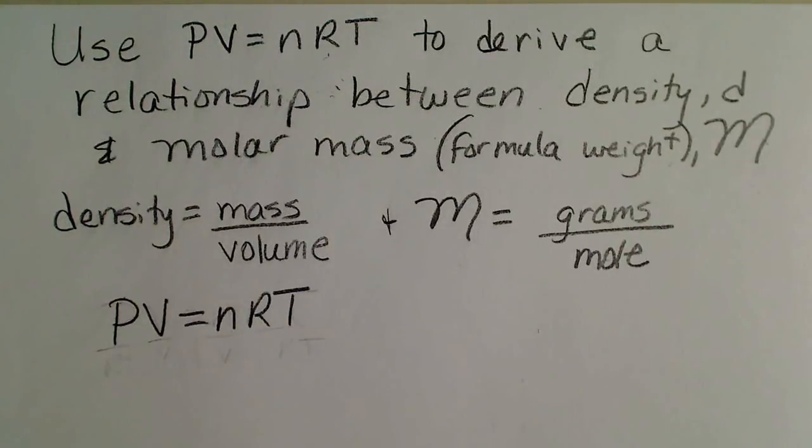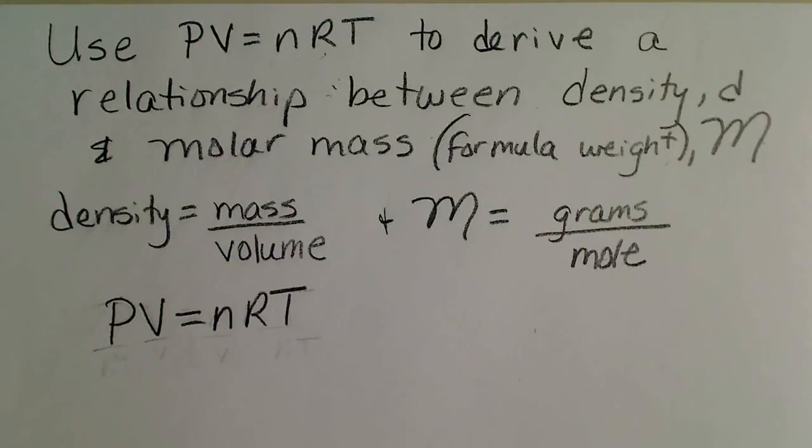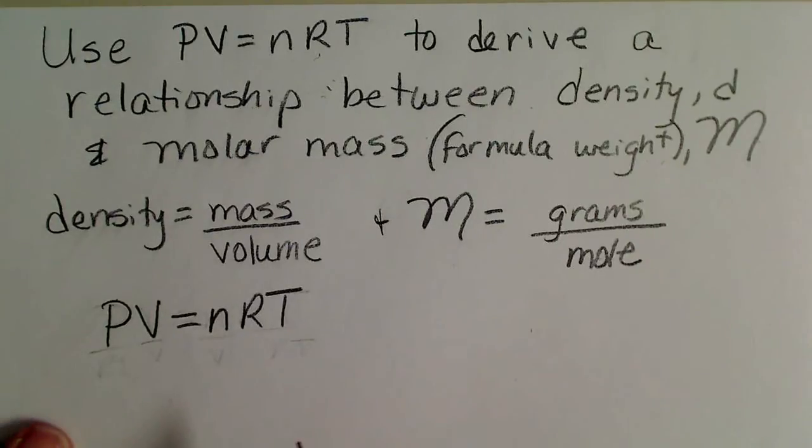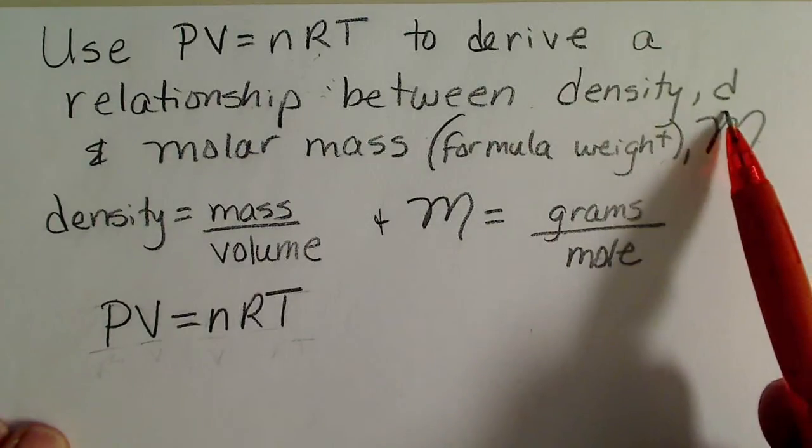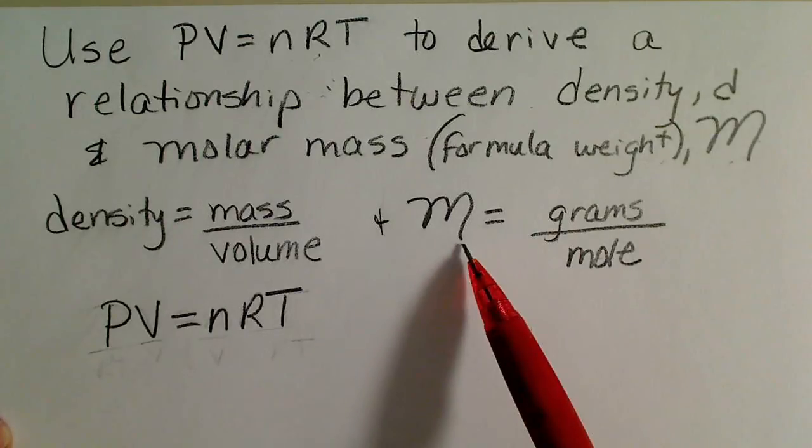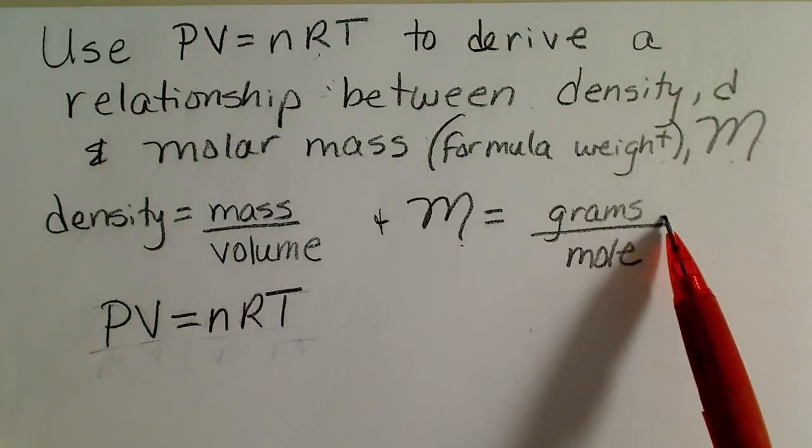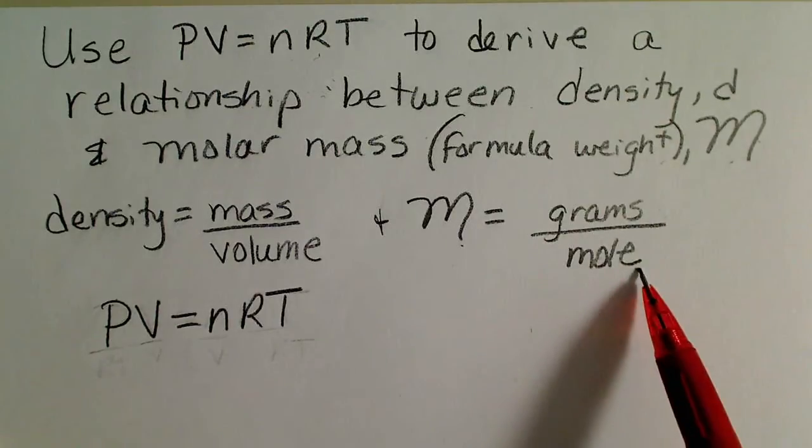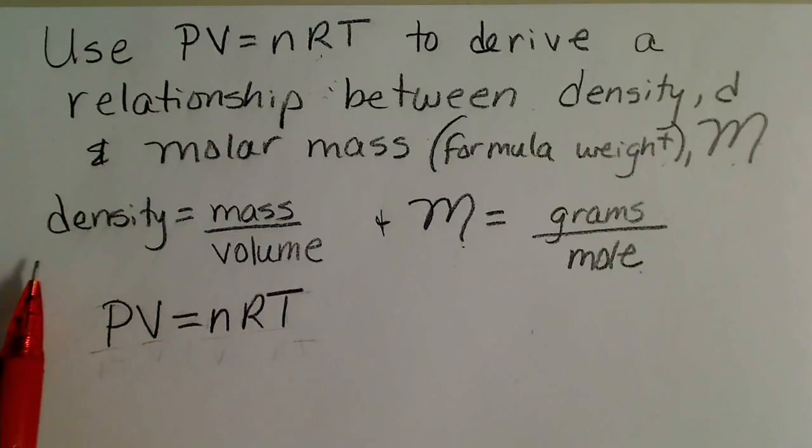We're going to rearrange that equation and do a substitution to go from moles to grams, and we'll see the mathematical relationship that relates density to a substance's molar mass. The molar mass of any formula is the atomic masses from the periodic table, so that gives us grams per mole, and density is defined as mass over volume.